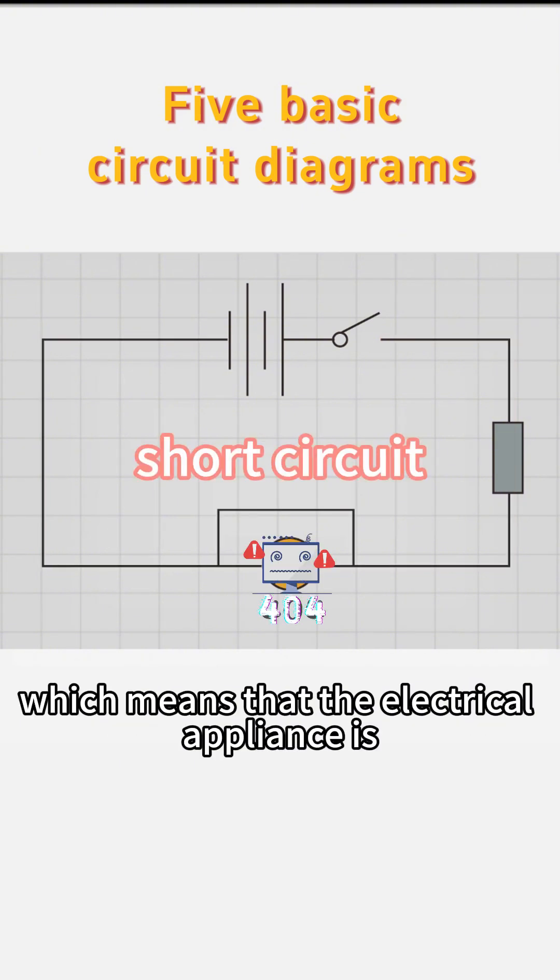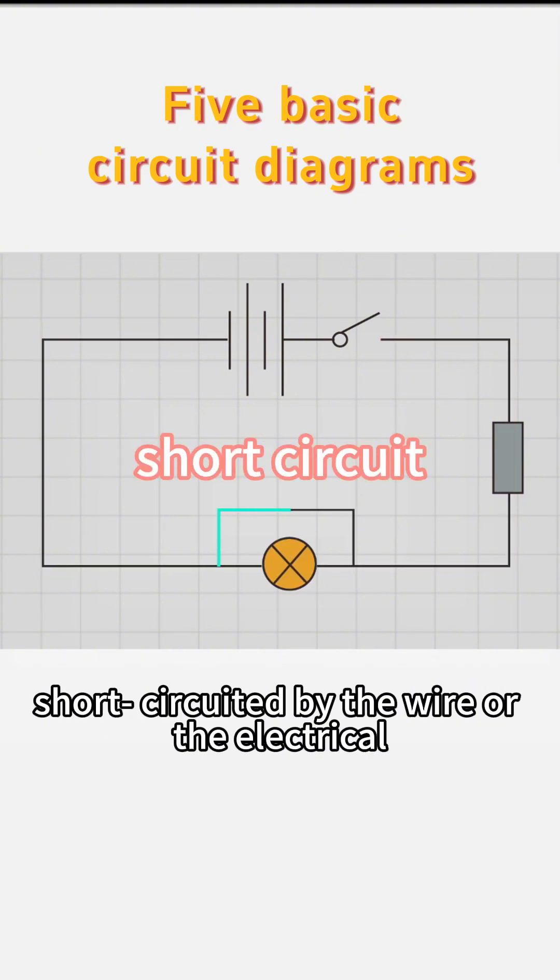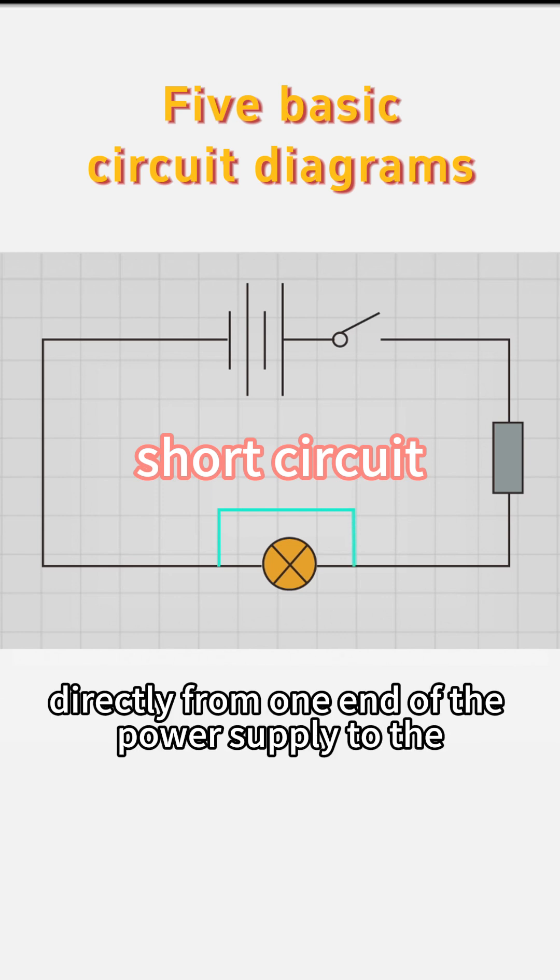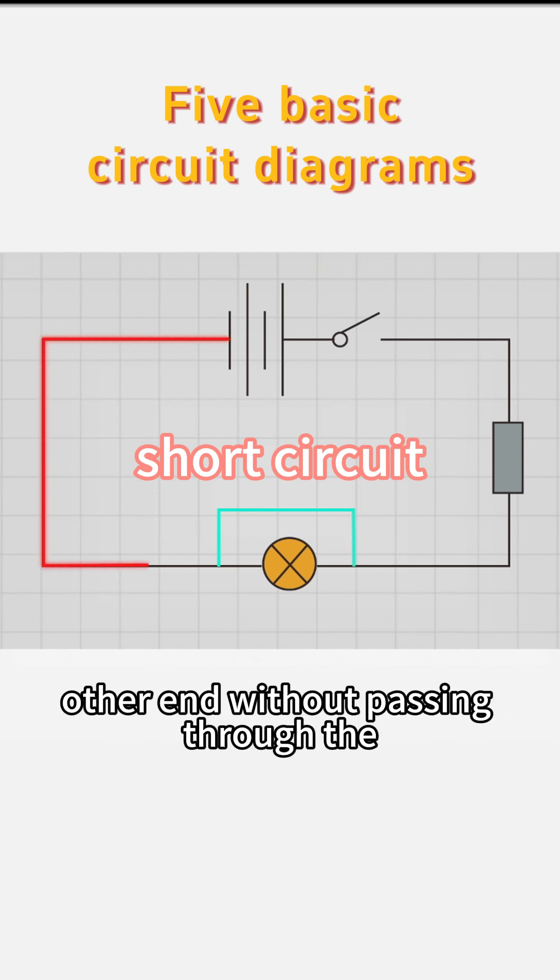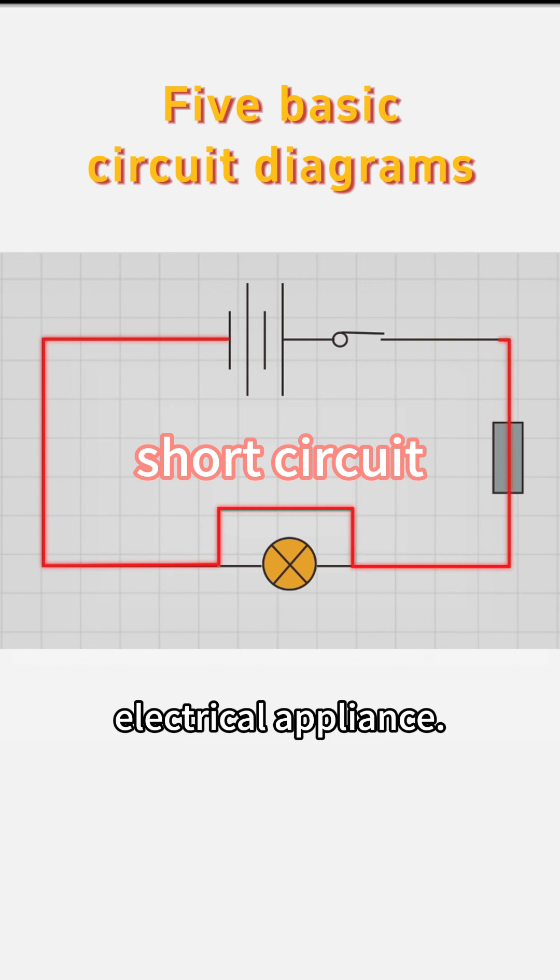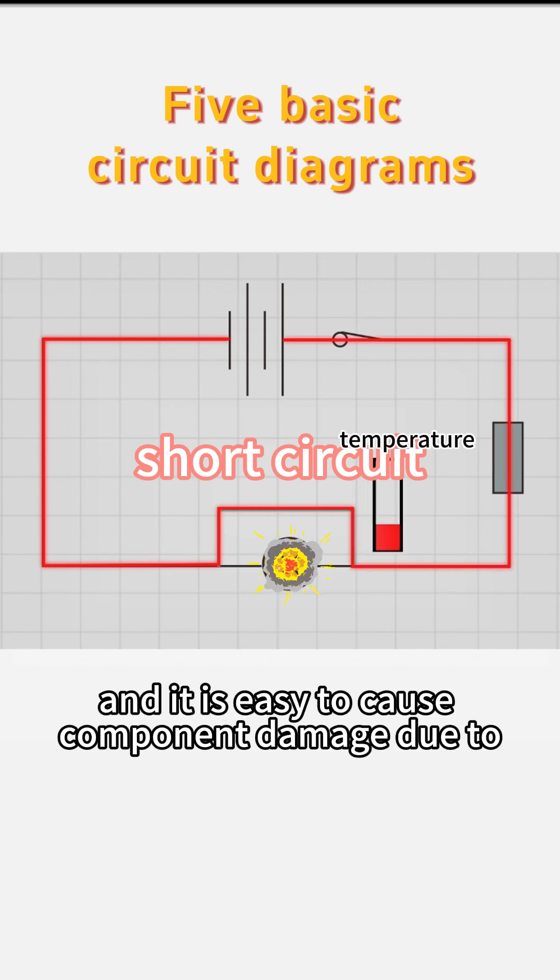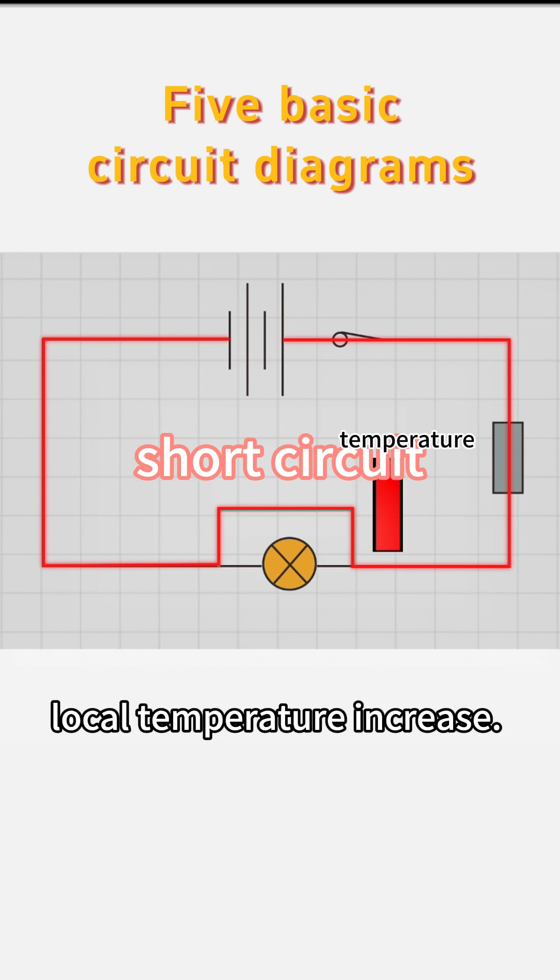The third is a short circuit, which means that the electrical appliance is short-circuited by the wire or the electrical appliance is damaged. The current returns directly from one end of the power supply to the other end without passing through the electrical appliance. At this time, the power supply is maximized, and it is easy to cause component damage due to local temperature increase.